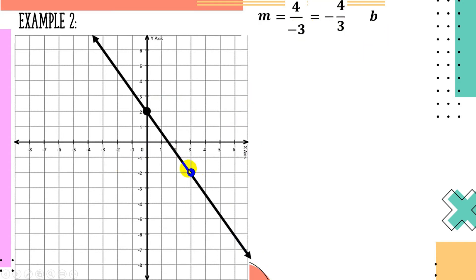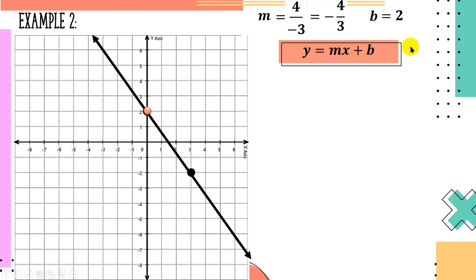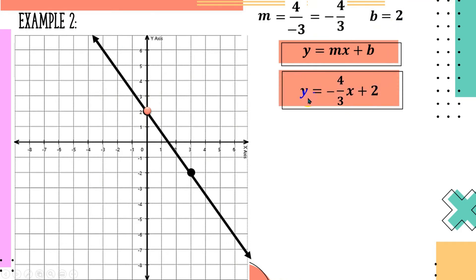For the y-intercept, we look at where the line intersects the y-axis. It clearly intersects at positive 2, so our y-intercept is 2. Now we have everything we need. Substituting into slope-intercept form: y equals negative 4 over 3 times x plus 2. This is the equation for this line: y equals negative 4 over 3x plus 2.